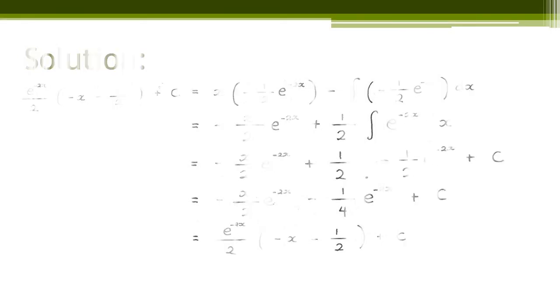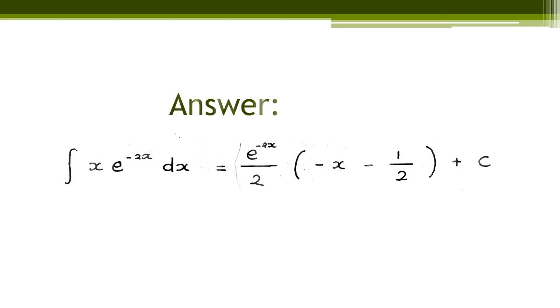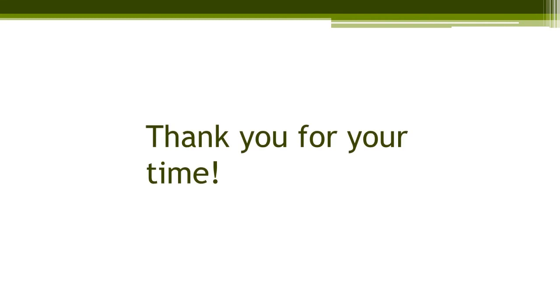Therefore, our final answer is e to the power of negative 2x over 2, multiplied with negative x minus 1 over 2, plus c. We hope you understand our slides and thank you for your time.